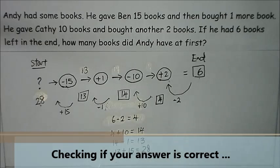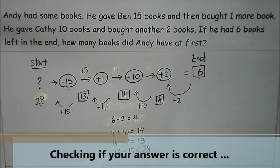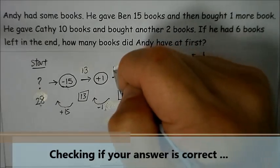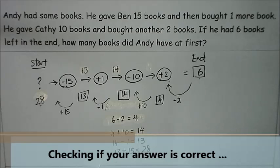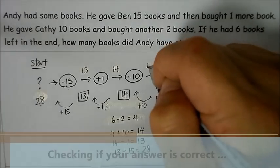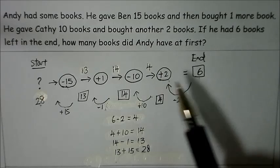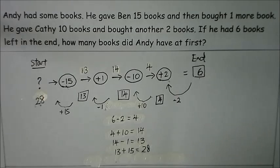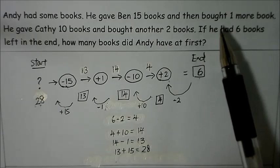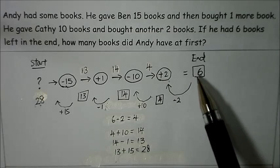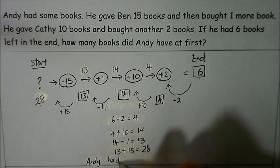I write it down here so that it is easier for me to check. And after he gave Ben the fifteen books, he bought one more book, which is thirteen plus one gives me fourteen. After which he gave Katie ten books, that means to say I use fourteen minus ten which gives me four. And after which he bought another two books, so I use four plus two gives me six. Now because this number twenty eight fulfills all the information given in the question and has the number of books left in the end as six, then we can see that Andy had twenty eight books.